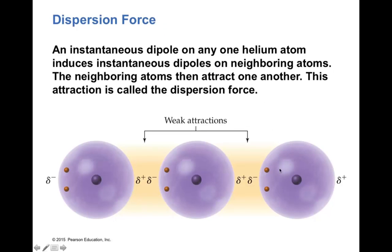Essentially, one atom may have a dispersion force where electrons concentrate on one side inducing a partial negative there and a partial positive on the other side. That positive end attracts electrons of a neighboring helium atom, causing both electrons to be close to it and inducing a partial negative charge there, with a partial positive on the far side. These interactions are very weak, but they are present in all atoms. This attraction is called the dispersion force.